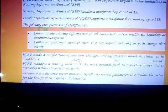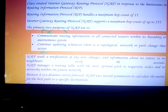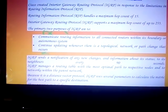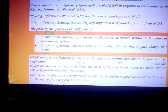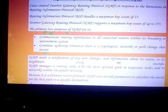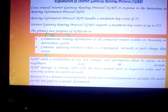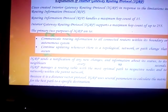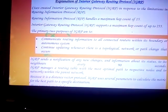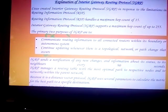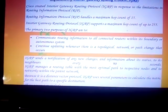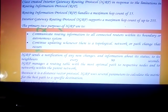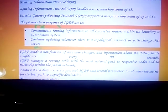The two primary purposes of IGRP are: first, to allow routers to communicate routing information to all connected routers within its boundary; and second, to continually update whenever a topological network or path change occurs. For example, when a network following ring topology is encountered, or further along a bus topology or star topology network, this information is instantly updated and transmitted to all routers in the area.